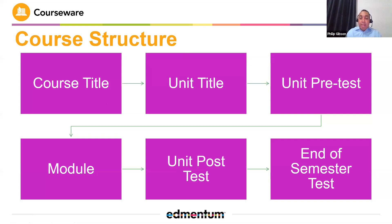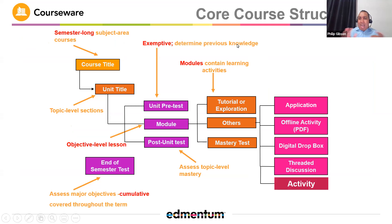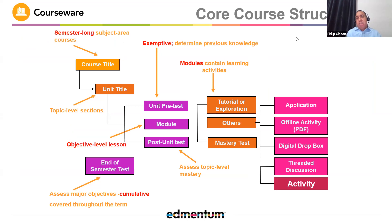As we drill down a little bit deeper, we now see that we have a lot more at play in our curriculum. Every module has a tutorial explanation and some additional resources. We have some offline activities, some drop-back activities, and a mastery test prior to getting to the end-of-semester test. When we get deeper into course customization, you'll be able to add resources to the curriculum, modify, or address any of these types of elements that are not immediately available in the system. But that's part of our course customization, which we will touch on later.